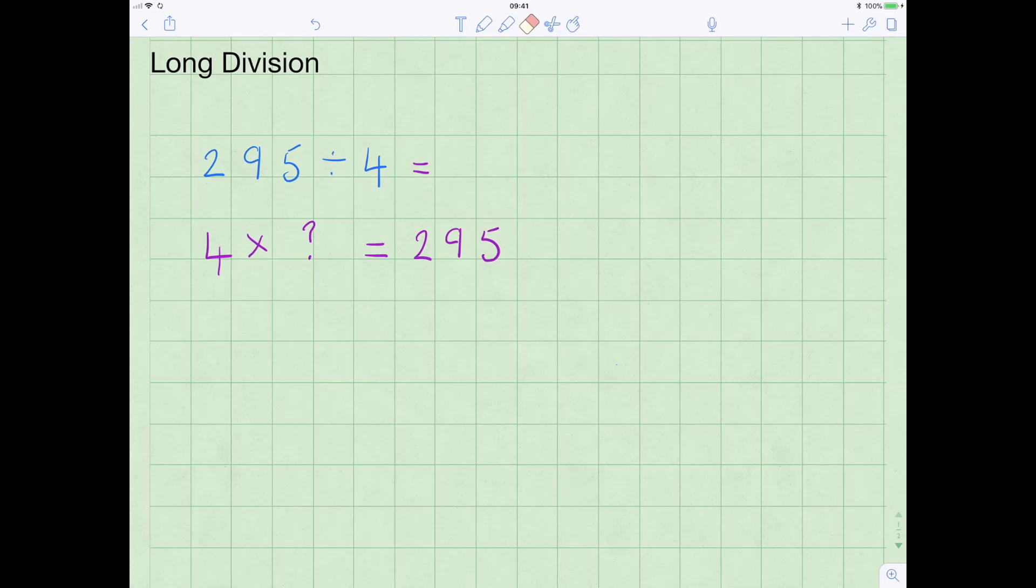The next type of question that we're going to look at is one where the answer is not going to be a whole number, so we're going to be dealing with decimals. The question that I've chosen to look at is 295 divided by 4, and when we've answered this correctly, we'll be able to say that 4 times the answer equals 295.